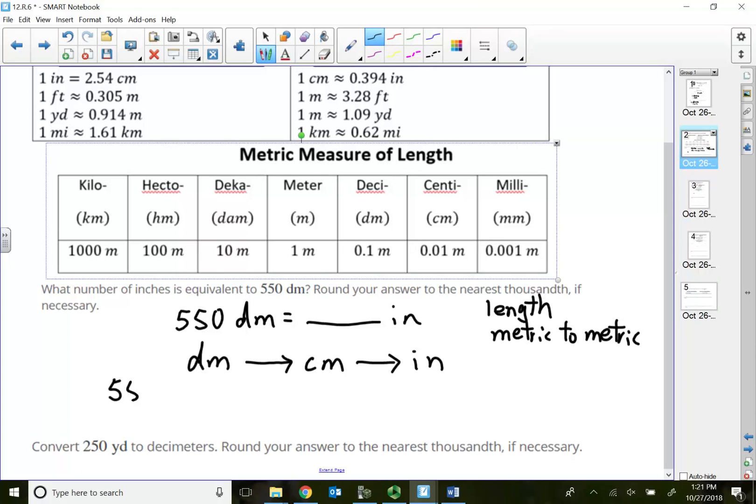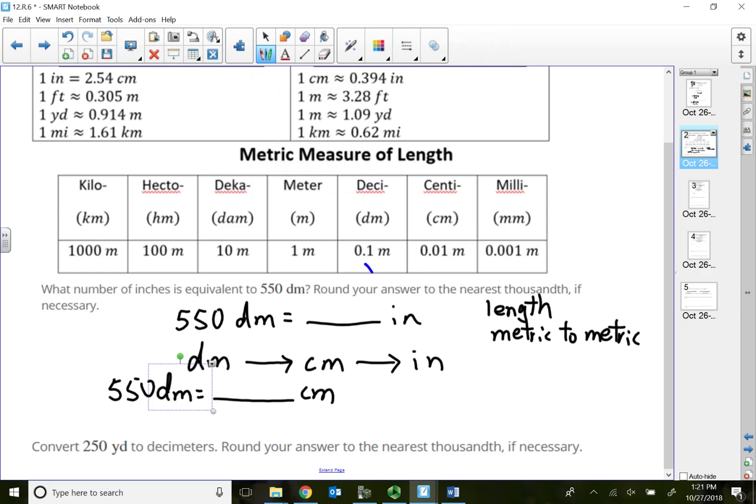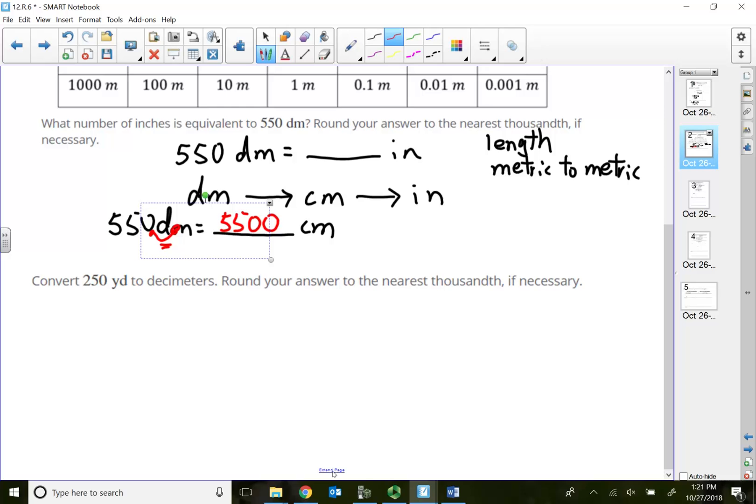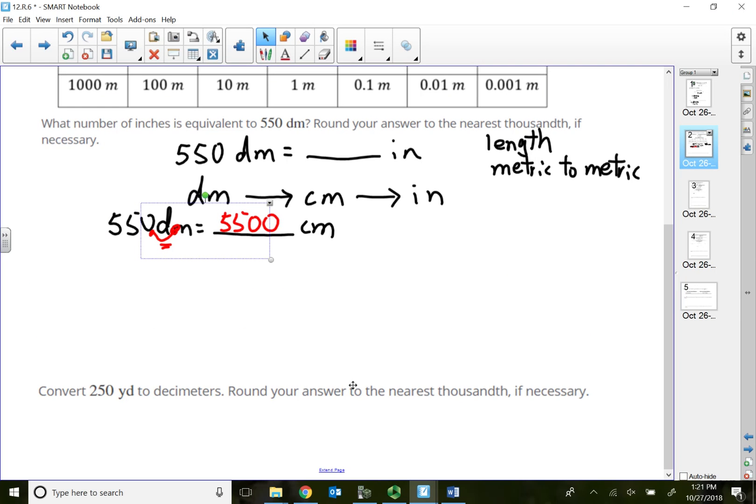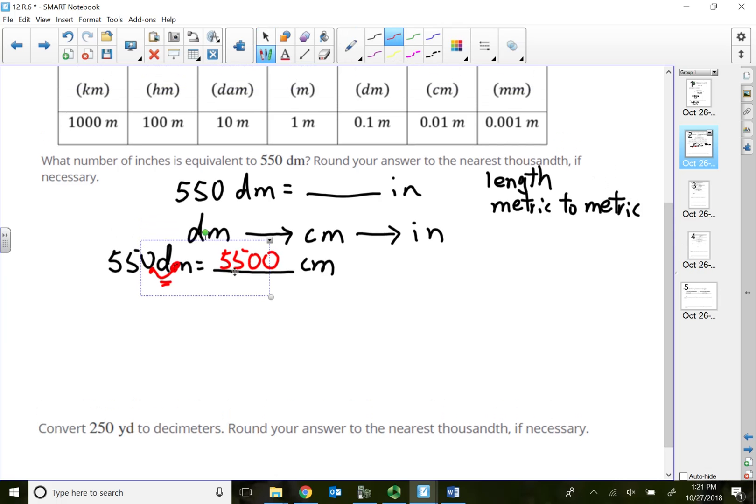550 decimeters converts to so many centimeters. Start at deci, go to centi - that's only one place to the right. If I move my decimal on 550 to the right one place, that gives me one empty slot, so that's 5,500 centimeters. Basically, 550 decimeters is the same as having 5,500 centimeters.